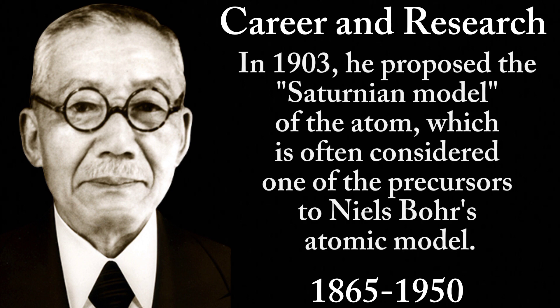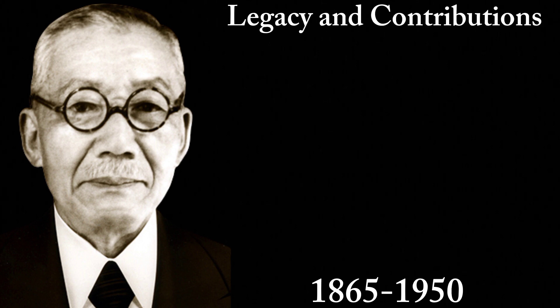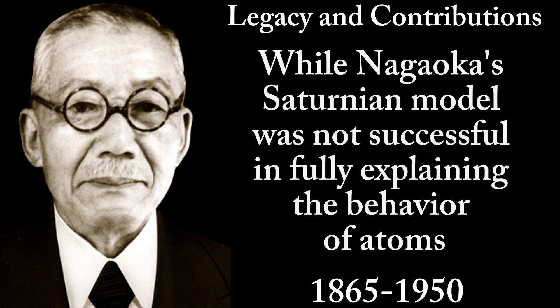In 1903, he proposed the Saturnian model of the atom, which is often considered one of the precursors to Niels Bohr's atomic model. In his Saturnian model, Nagaoka suggested that the electrons orbited the nucleus in a manner similar to the rings around Saturn.